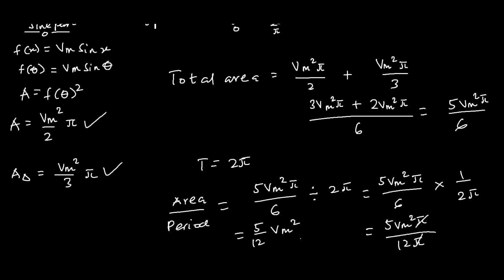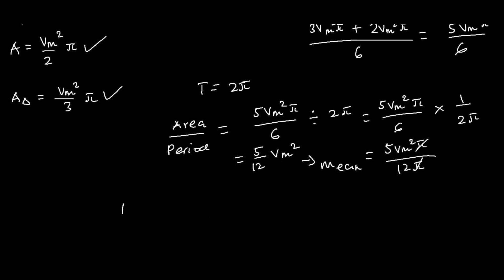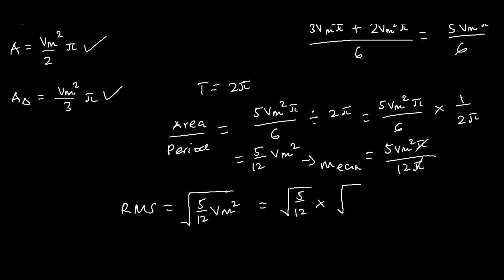This value, 5Vm²/12, is the mean. To find the RMS (root mean squared) value, we take the square root of the mean. So RMS = √(5Vm²/12) = √(5/12) × √(Vm²) = Vm × √(5/12).